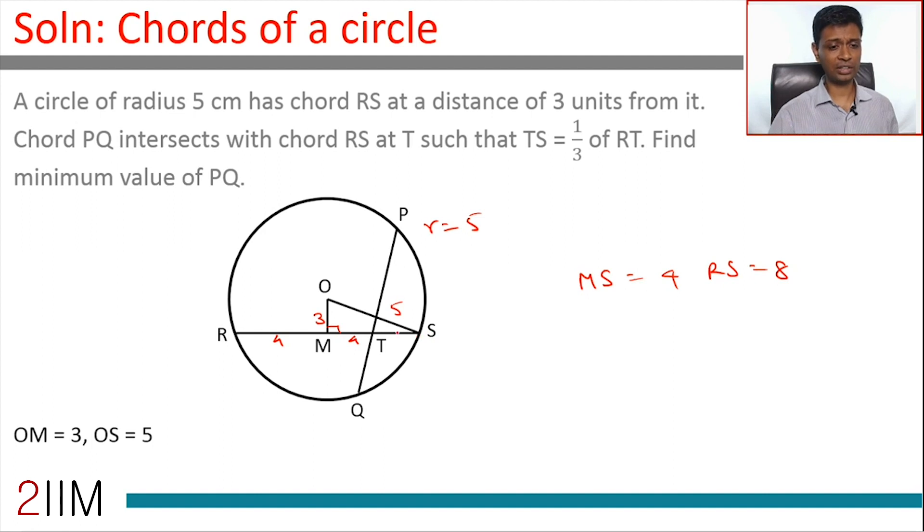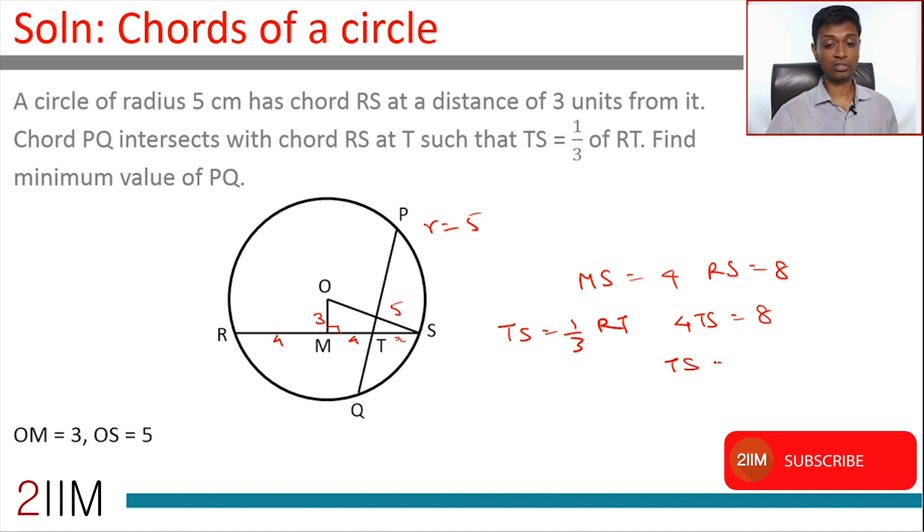We know that TS is one third of RT. If TS is 1/3 RT, if this is x then this is 3x. Straight away we know that 4 times TS equals 8. RT is 3 times TS, so 3TS plus TS is RS which is 8, or TS equals 2. So this is 2, this is 2, this whole thing is 4.